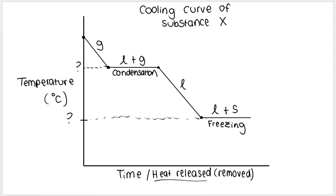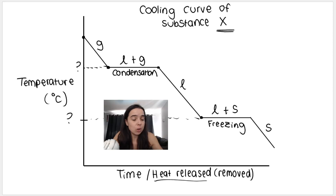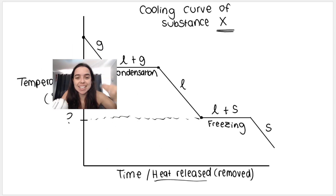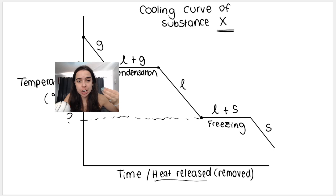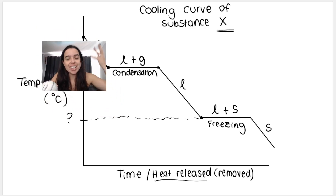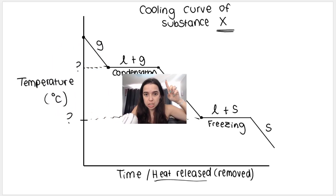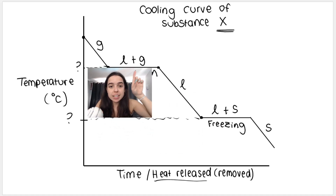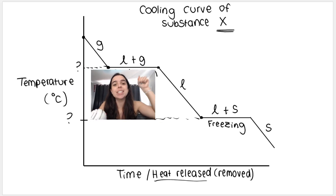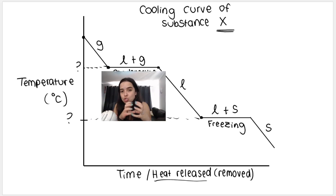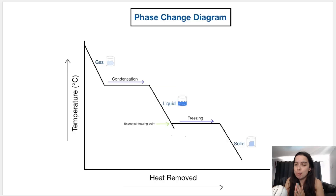The temperature at which the second flat part occurs is the freezing point of substance X. During phase changes, both phases are present. After the phase change we've gone from liquid to solid, and the graph continues as a hot solid, warm solid, colder and colder solid. Just like with the heating curve, the inclined parts represent kinetic energy changing — in this case the particles are slowing down, so kinetic energy decreases and temperature decreases. The horizontal parts have constant kinetic energy, but potential energy is decreasing as the particles move closer together and intermolecular forces get stronger.